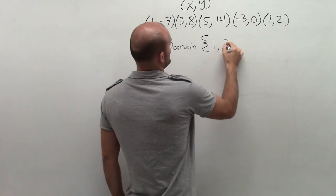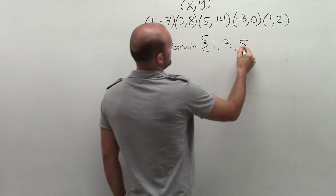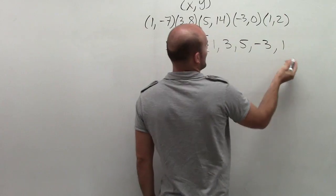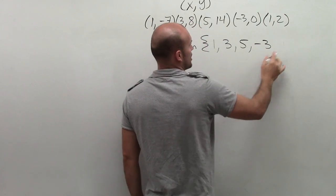So our domain is going to be 1, 3, 5, negative 3, and 1. Now I don't need to write 1 again, since it's already redundant.